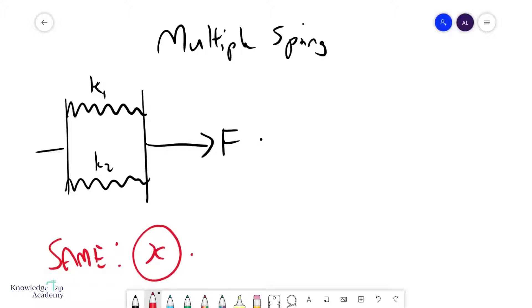Because if you pull this thing, whether you like it or not, if this thing moves in one direction, the two springs have to move with the same extension. And that is very crucial.